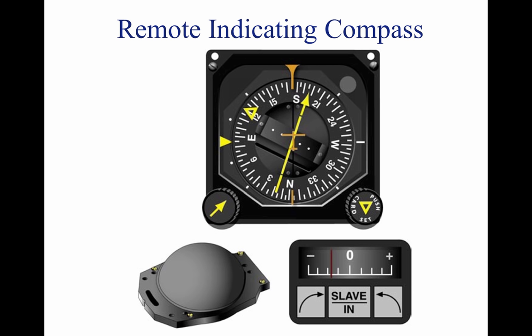The slaving control and compensator unit has a push button that provides a means of selecting either the slave gyro or the free gyro mode. This unit also has a slaving meter and two manual heading drive buttons. The slaving meter indicates the difference between the displayed heading and the magnetic heading. A right deflection indicates a clockwise error of the compass card, and a left deflection indicates a counterclockwise error. Whenever the aircraft is in a turn and the card rotates, the slaving meter shows a full deflection to one side or the other. When the system is in free gyro mode, the compass card may be adjusted by depressing the appropriate heading drive button.